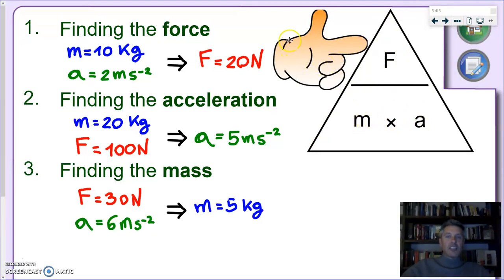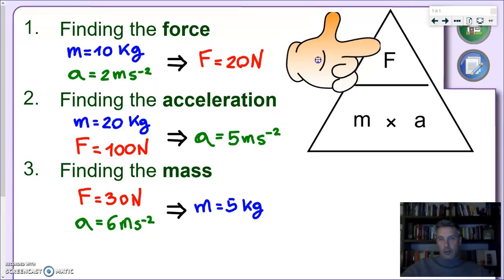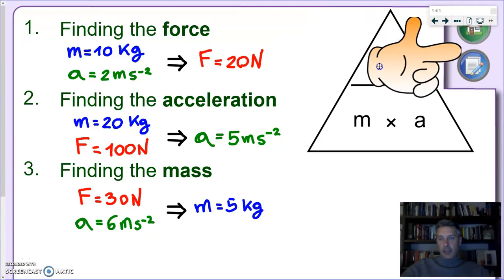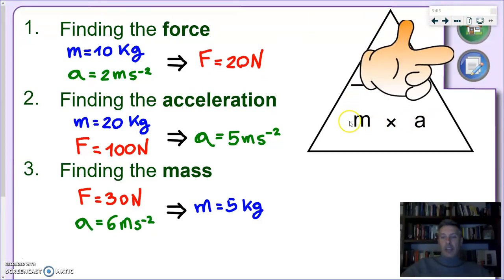So let's start with the simplest case. We want to find the force. Let's imagine we have an object with a mass of 10 kilograms and it's undergoing an acceleration of 2 meters per second squared. We want to find the force. So I'm going to move my hand, cover the force and we get the formula mass times acceleration. So 10 times 2 gives me a force of 20 newtons.